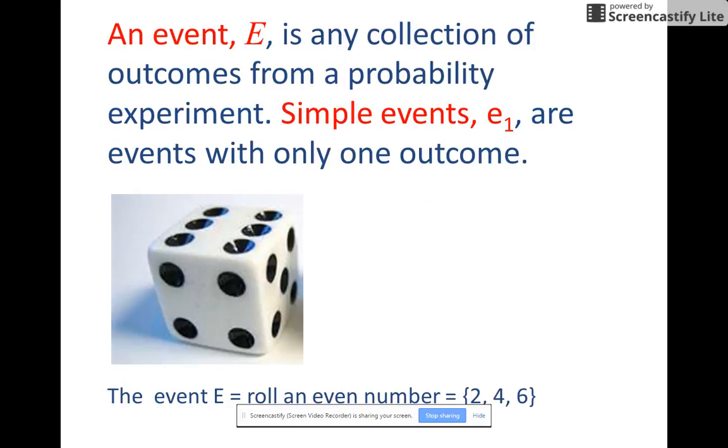Now, event E, and we're going to be talking about events, those are things, random events that happen in any collection of outcomes from a probability experiment. Simple events are events with only one outcome, but you can specify a variety of possible outcomes that would satisfy the criteria of E. So here's an event that says the event E equals roll an even number. So if you roll two, four, or six with one die, you would satisfy the criteria for E.